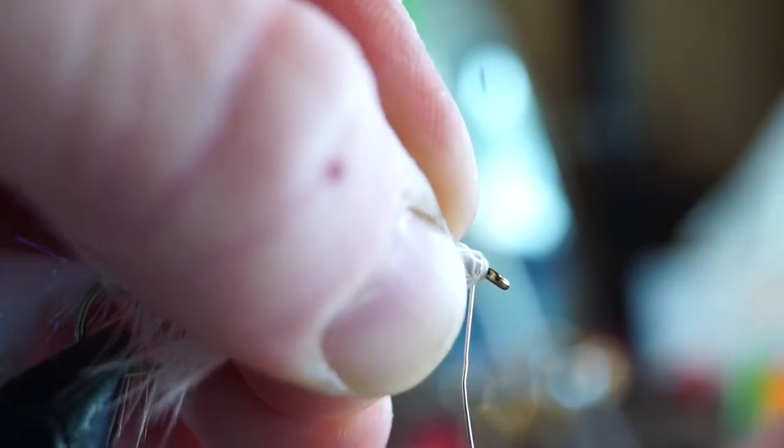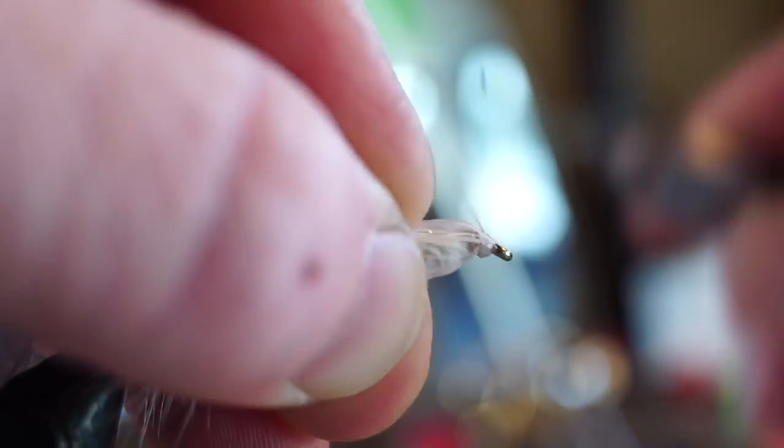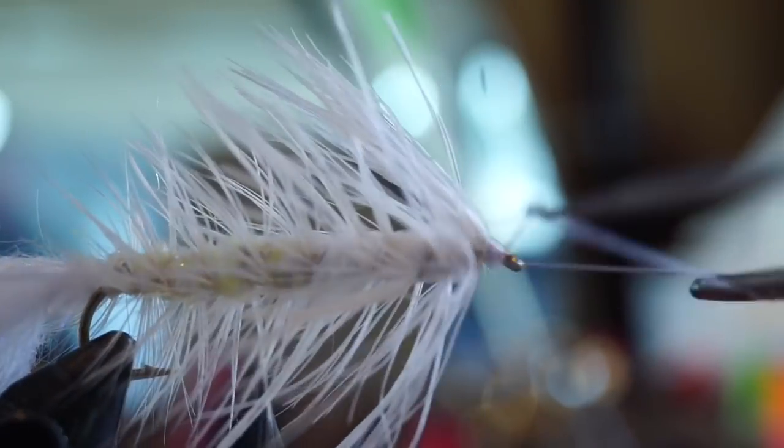When you reach the front, pull all the fibers rearward, and then make two very tight wraps over the wire. Then helicopter the wire off clean. Make a few more tight wraps to really secure the wire, and build a small, clean head on the fly. Now you can whip finish your fly.